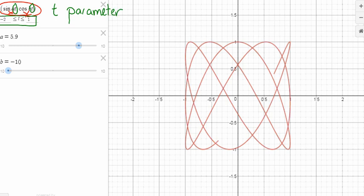What we have here is a function where there are two different instructions for the x and y coordinates, and we have a third variable, a letter t, which we call in mathematics a parameter.